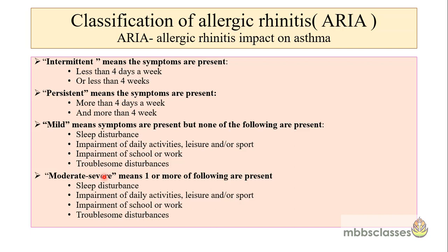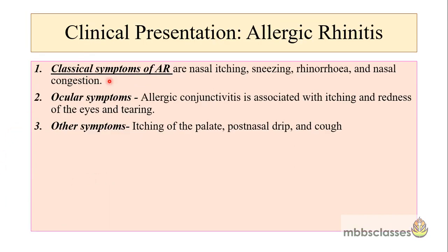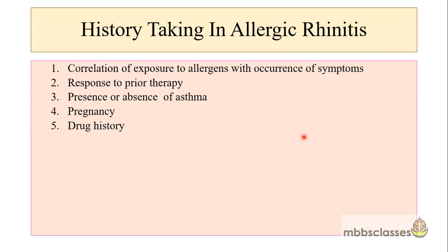While taking the history, we can classify the type of allergic rhinitis and the grading of the disease. The classical symptoms of allergic rhinitis are nasal itching, sneezing, rhinorrhea and nasal congestion. Some patients may also have additional ocular symptoms like itching, redness of the eyes and tearing, itching of the palate, post-nasal drip and cough. When taking history, always try to correlate exposure to allergens with the occurrence of symptoms. Take a history of any prior therapy, presence or absence of asthma, a good family history, and a detailed drug history of the patient.